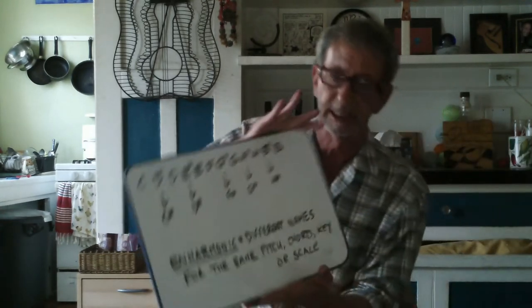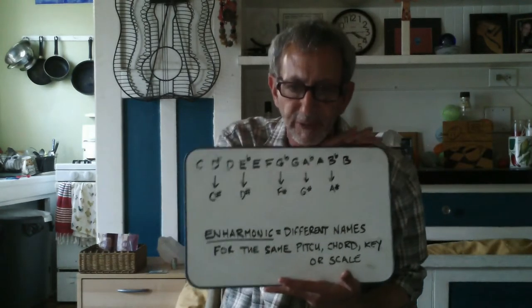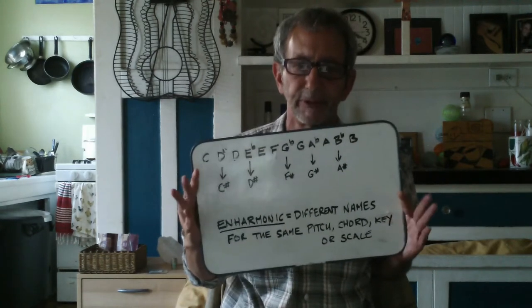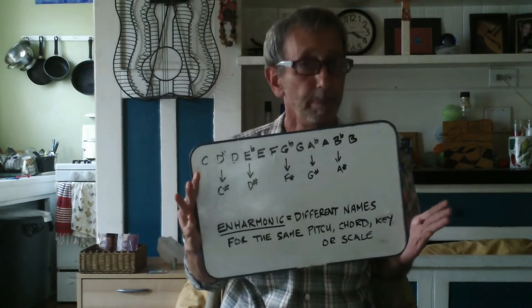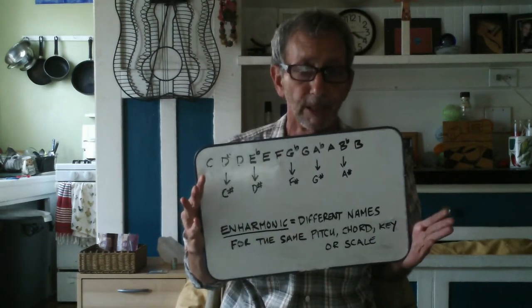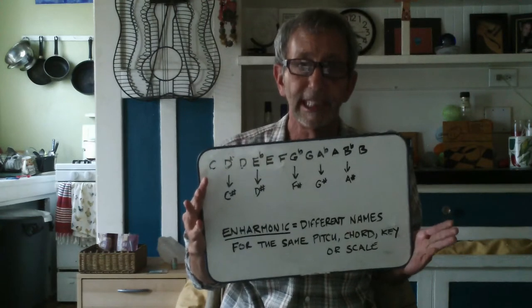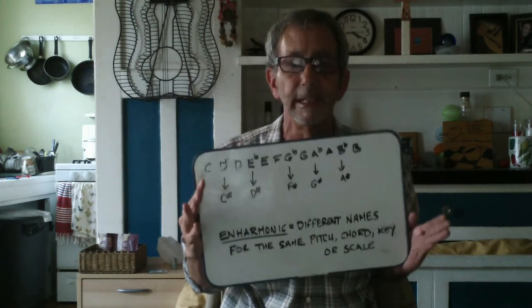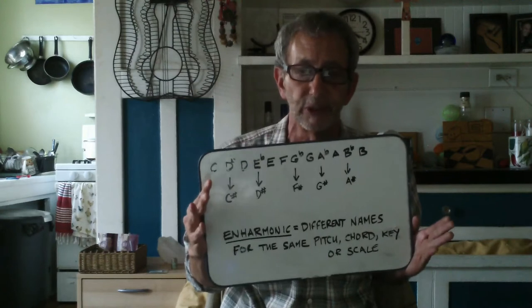So I use this fancy term enharmonic — what does it mean? Enharmonic: different names for the same pitch, chord, key, or scale. That's right — there are even enharmonic keys.